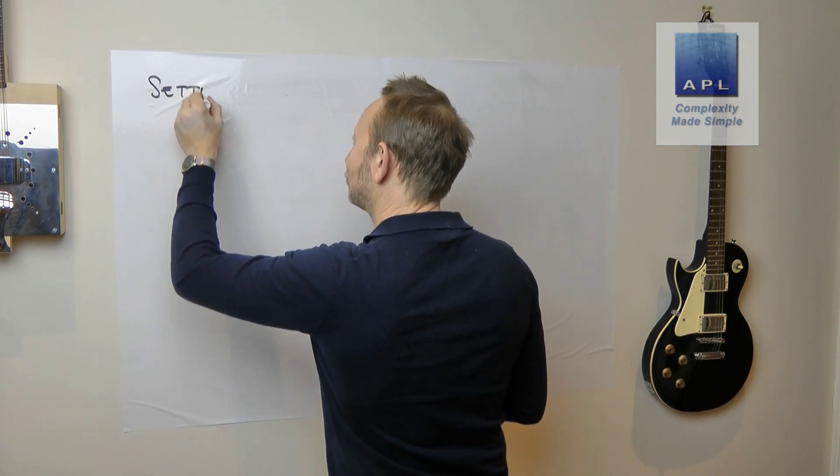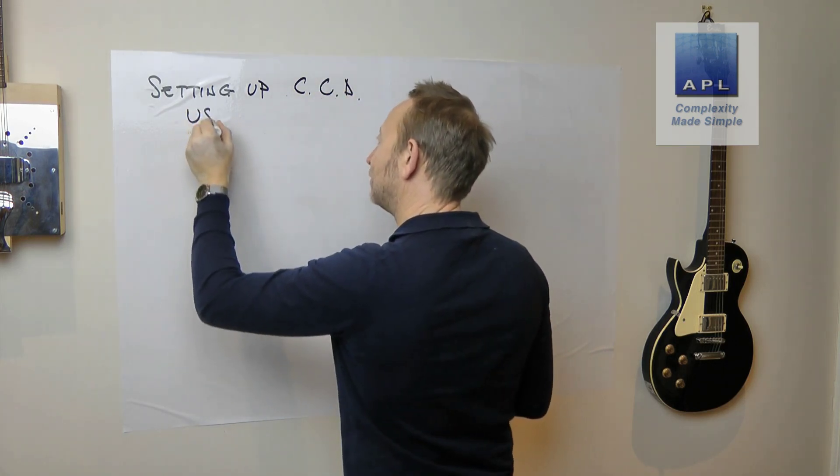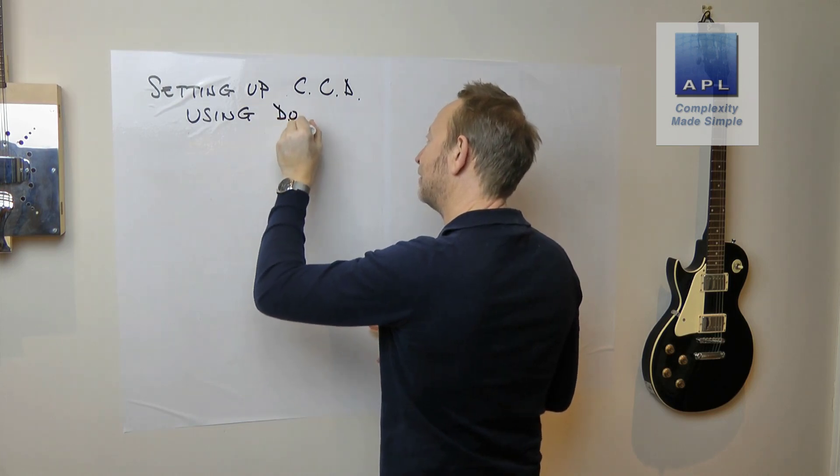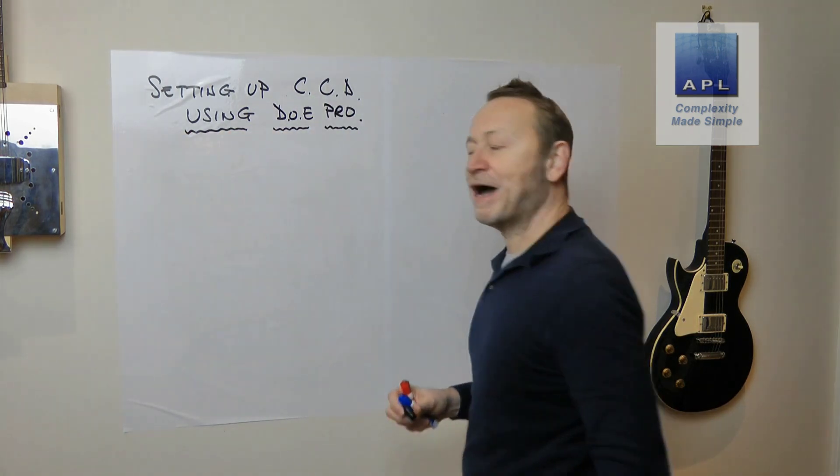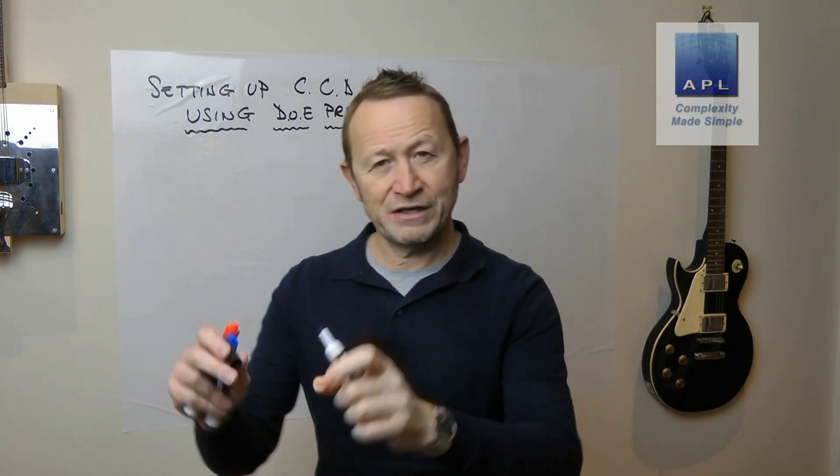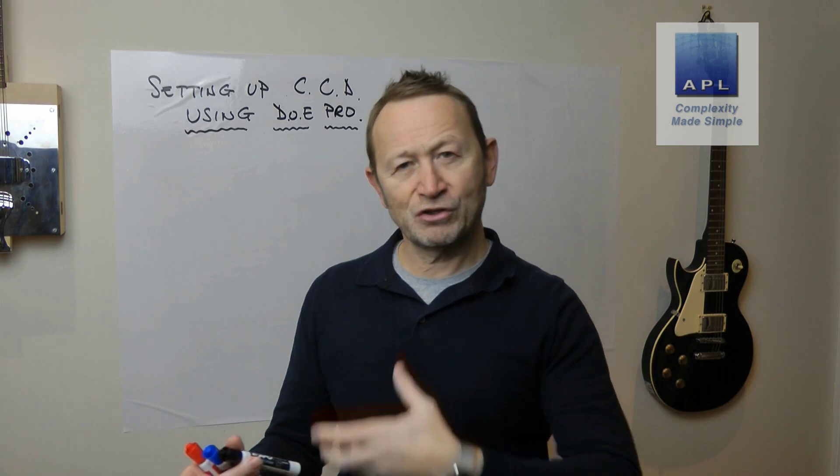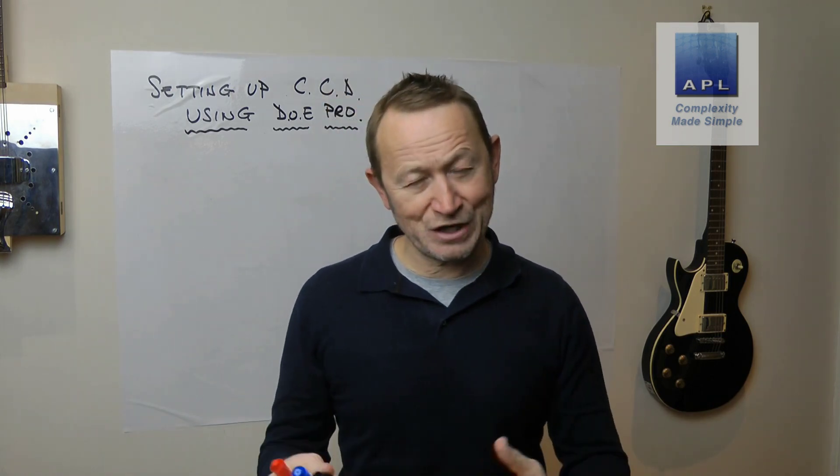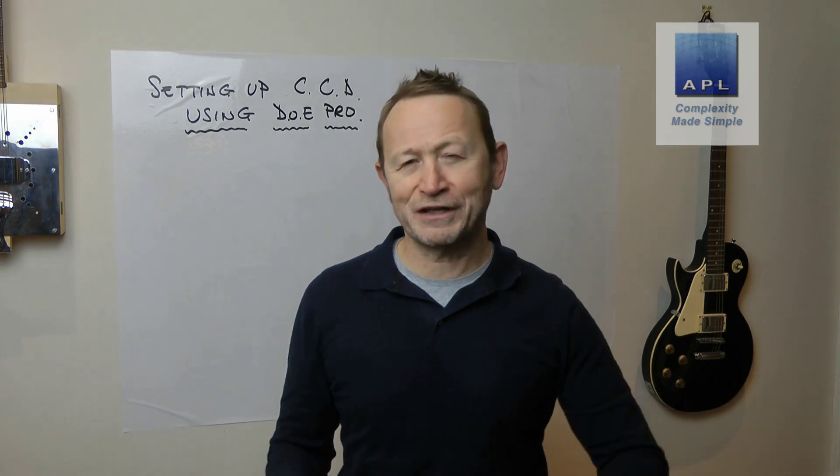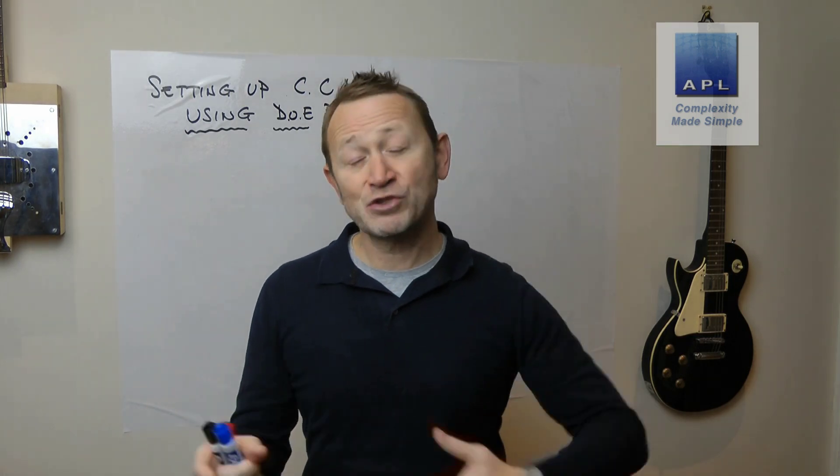So that's what we're going to do today - it's back to a software tutorial, setting up a central composite design using DOE Pro. Now there is a video where we are analyzing a central composite design. It's in the videos about design of experiments, so if you go to my channel you can find videos about how to analyze a central composite, also how to augment the central composite. But what there's not is just a straightforward video showing you how to set one up from first principles if you're going to go straight to the central composite design.